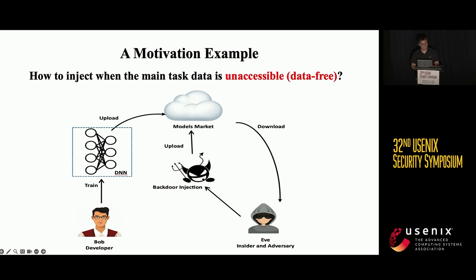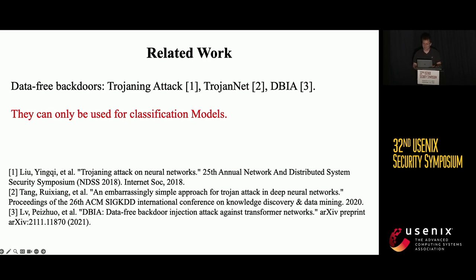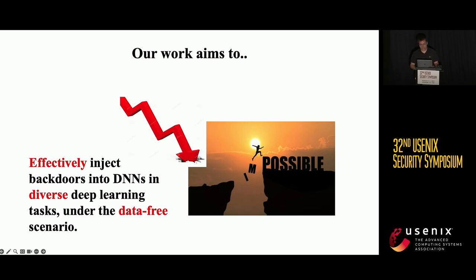In particular, in the knowledge transfer domain, data-free means no access to the training or testing data of the pre-trained model, and we borrow this concept in our paper. To resolve the main task access issue, some data-free backdoors have been proposed. For example, one approach generates training samples by reverse engineering against each label. However, such methods can only be utilized for classification tasks. Trojanite and DBI also propose data-free backdoors, and they are also limited to classification tasks. Therefore, we aim to propose an approach to effectively inject backdoors into DNN models across diverse deep learning tasks under the data-free scenario.